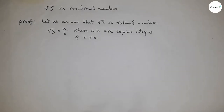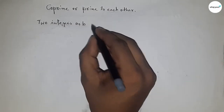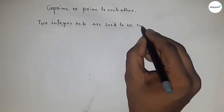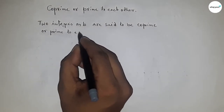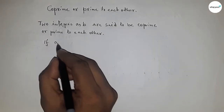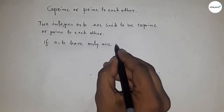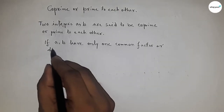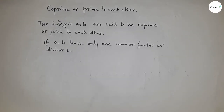Now discussing about co-prime, or prime to each other: two integers a and b are said to be co-prime or prime to each other if a and b have only one common factor. That means 1 is the only common factor. This is the concept of co-prime.